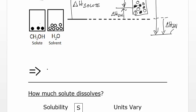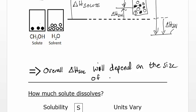So we can say overall, the delta H of solution will depend on the size of the other delta H's. And those will be different for every different solute and solvent combination. Sometimes it's positive, and sometimes it's negative.